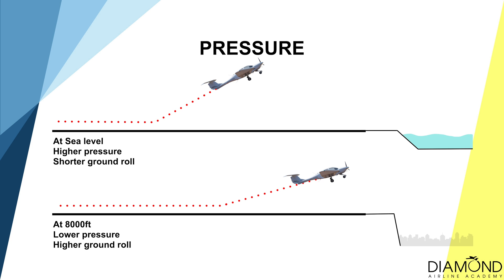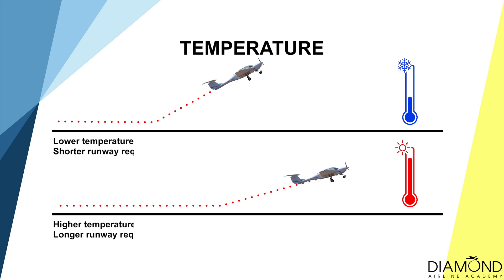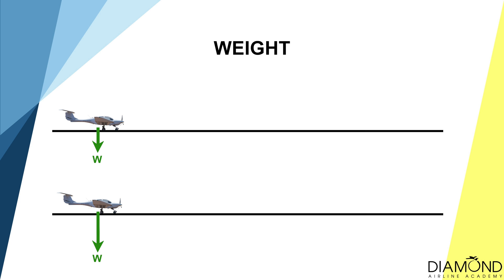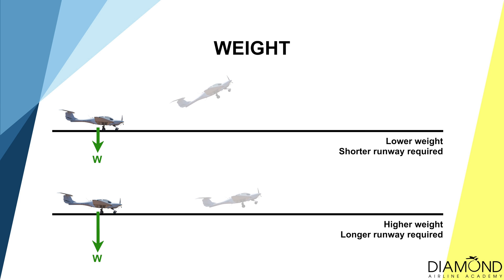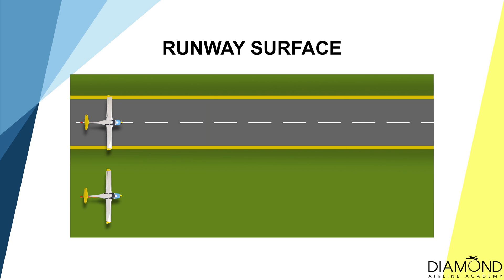Secondly, when the air temperature is higher, the aircraft would require more runway to take off. The effect of the increase in temperature is very similar to the decrease in pressure, as they are inversely proportional. Thirdly, the weight of the aircraft — when the aircraft is heavier, it takes longer to accelerate to the rotation speed, thus requiring more runway to take off. It will also reduce the climb angle.